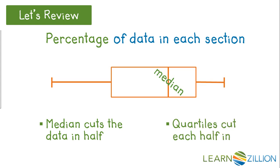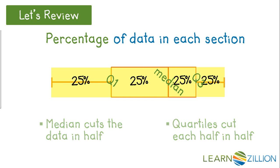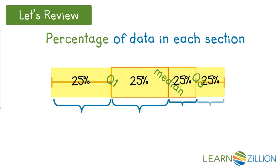Next, the quartiles cut each half in half. You'll see that each section contains 25% or a fourth of the data. The size of this section doesn't matter. 25% of the values are located in each section.